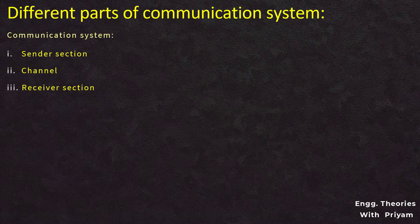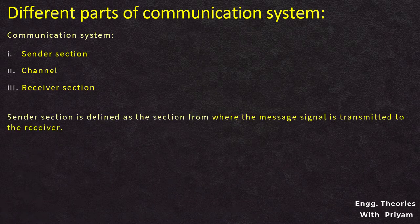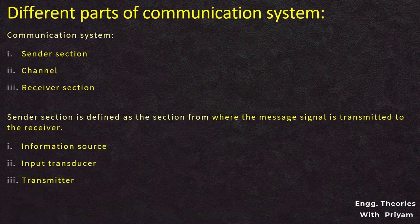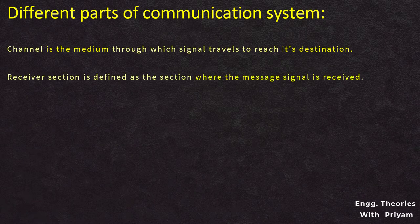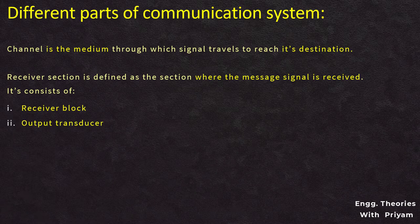The sender section is where the message signal is transmitted, and it consists of the information source, input transducer, and transmitter. The channel is the medium through which a signal travels to reach its destination. The receiver section is where the message signal is received, and it consists of the receiver block, output transducer, and the user of information.